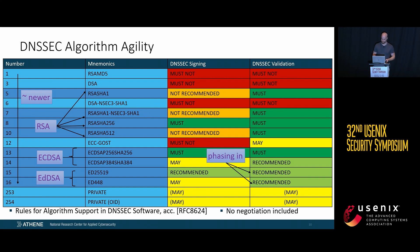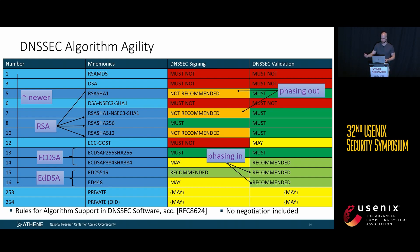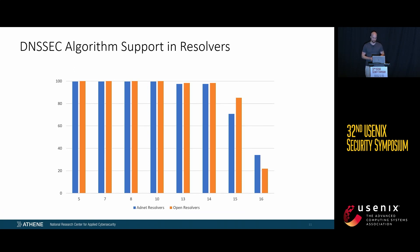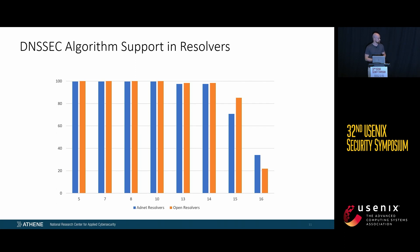Algorithm agility works such that resolvers first start supporting new algorithms, then zones get signed with them, then after some time zones stop using them, and eventually resolvers stop supporting them. Notably, there is no negotiation included in this process. As for DNSSEC algorithm support in resolvers, the RSA-based algorithms 5 through 10 and ECDSA algorithms 13 and 14 are supported by the vast majority of resolvers, while EdDSA-based algorithms have some support but it is not ubiquitous.